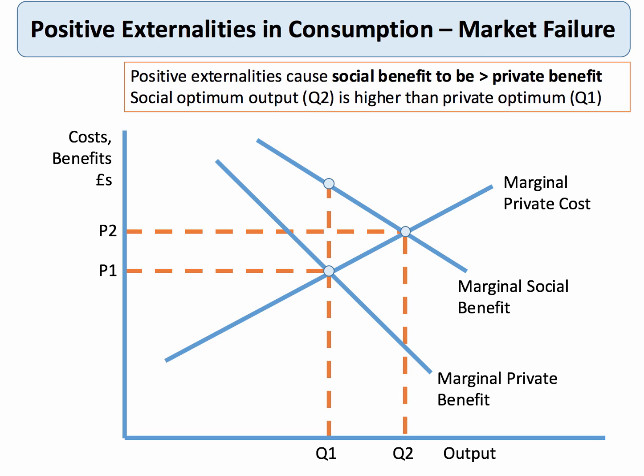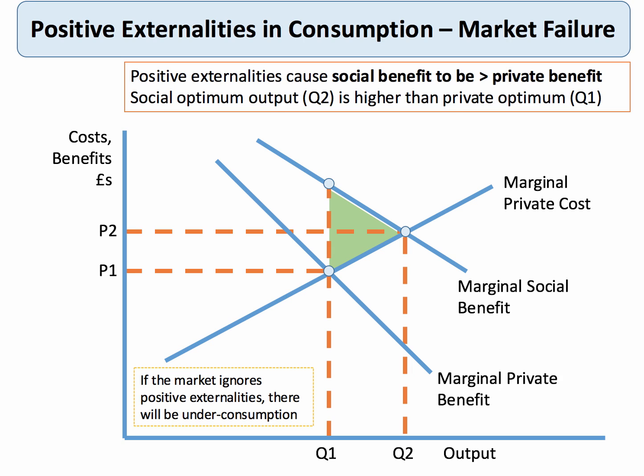Therefore, if we don't take into account the externalities, there is a danger of market failure. The net deadweight loss of welfare — social welfare — is shown by the green shaded triangle in our diagram. This is because output Q1 lies below the optimal level of consumption from society's point of view. The key point is: if the market ignores positive externalities, there will be under-consumption of the good or service, and that leads to market failure.